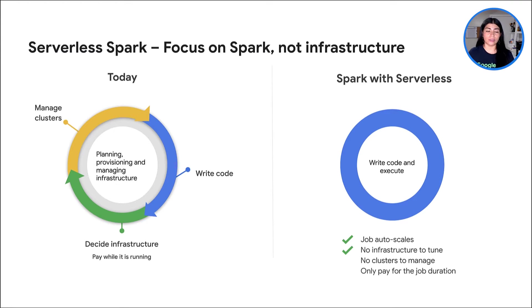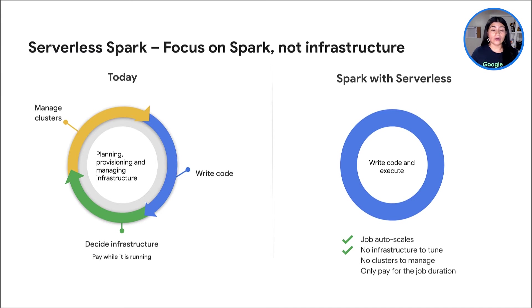Today, Spark developers spend only a portion of their time writing code, and the rest goes to planning, provisioning, and managing infrastructure. This stems from the fact that while being a very powerful distributed processing framework, Spark is also very complicated, with lots of parameters and knobs to tune. At Google Cloud, we are on a mission to give developers their time back, eliminating the need to worry about infrastructure at all. Our serverless Spark offering is the industry's first auto-scaling offering for all workloads. You write the code and submit the job — we take care of everything else, from figuring out the best default configuration, to auto-scaling, and to optimizing infrastructure usage.